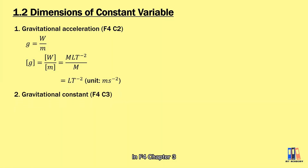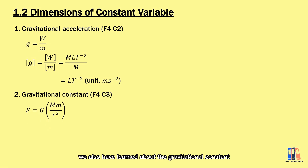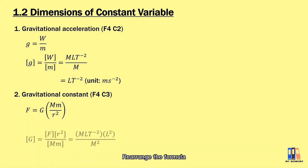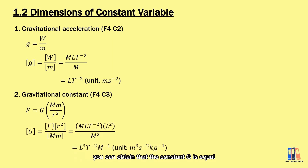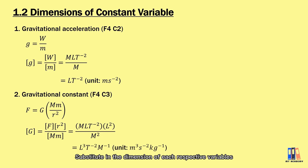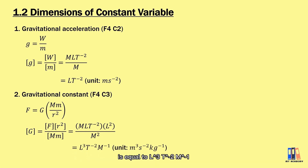In Form 4 Chapter 3, we also learned about the gravitational constant G from the formula F = GMm/r². Rearranging, G equals force times distance squared divided by the product of two masses. Substituting dimensions gives G the dimension of L³/(T²·M), with units of meter cubed per second squared per kilogram.